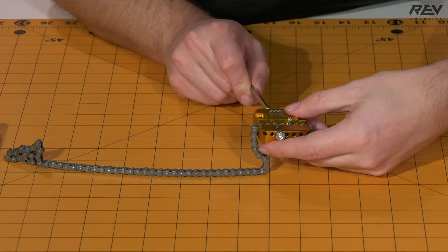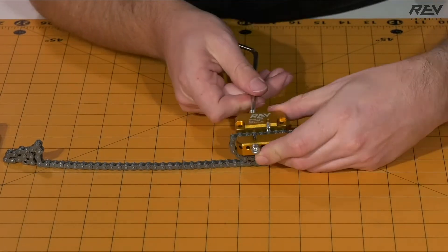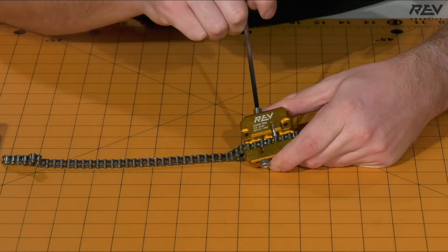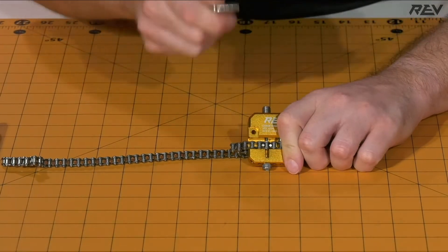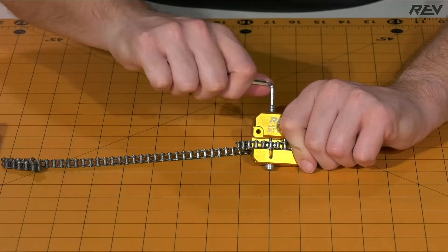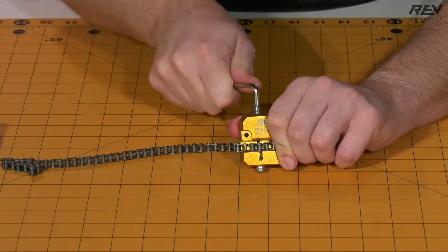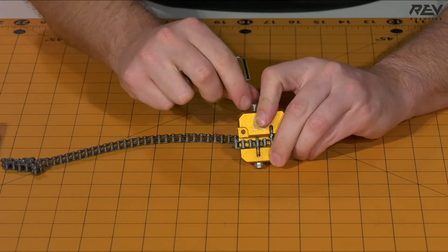Now from here, you're going to take your pin screw and you want to basically set that through and slowly crank this down. Now, this part is going to take a little bit of torque to be able to move the pin through and press it out of the chain itself.